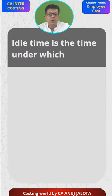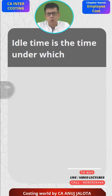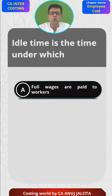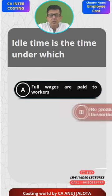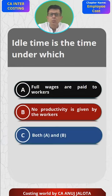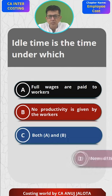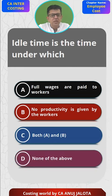The question: 'Idle time is the time under which' — here are the four options. Option A: full wages are paid to the workers. Option B: no productivity is given by the workers. Option C: both A and B. Option D: none of the above. Try to think of the answer — this is an easy one.